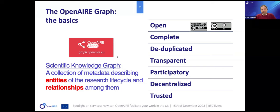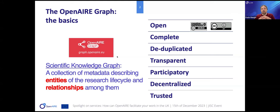It's a collection of metadata describing entities that are common in the research life cycle, together with the relationships among them, which we use to detect how these objects are connected — from organizations, grants, publications, and in open science, also research data and software. The aim of the graph is to be as open as possible, to the extent of being CC0 and CCBY where possible.